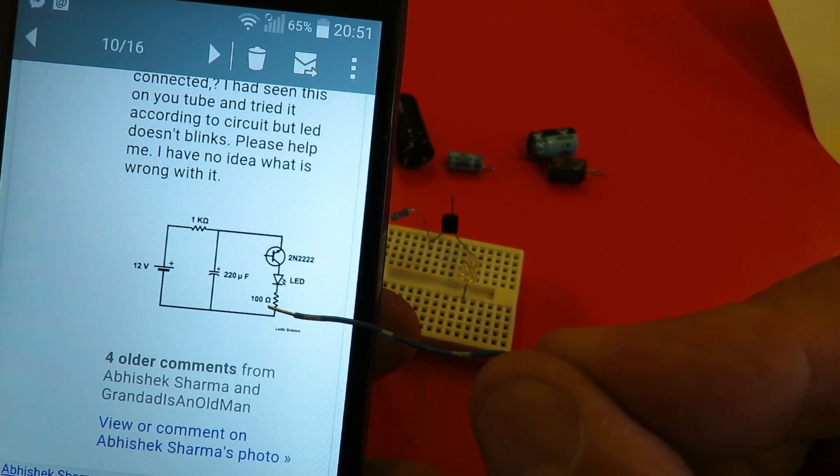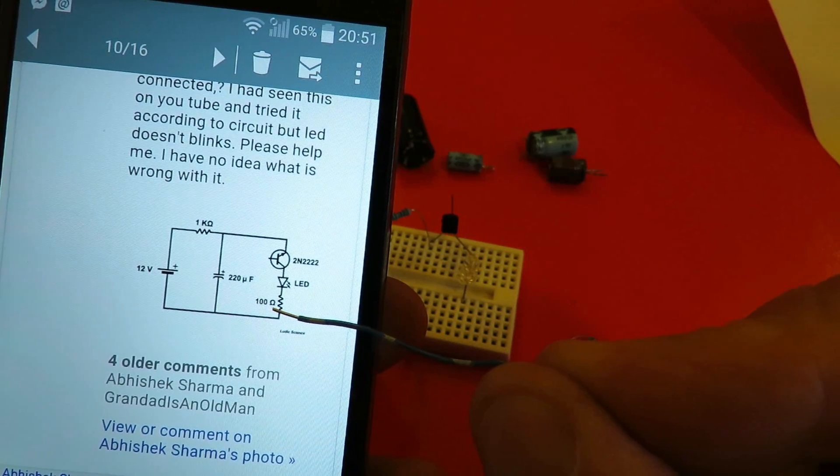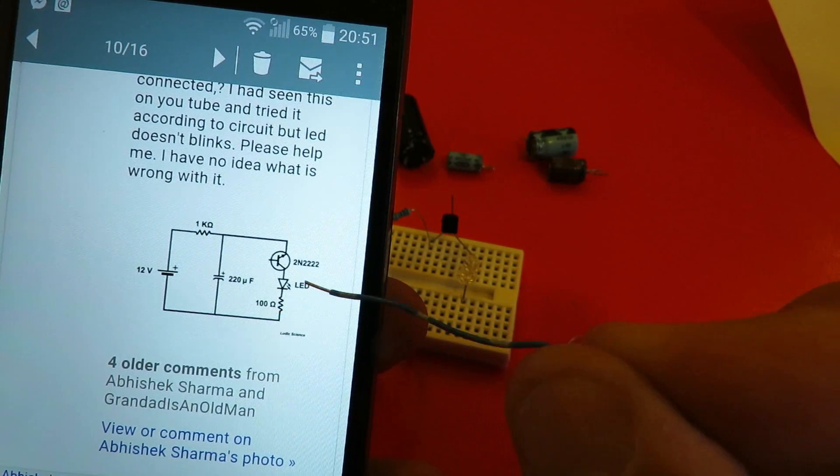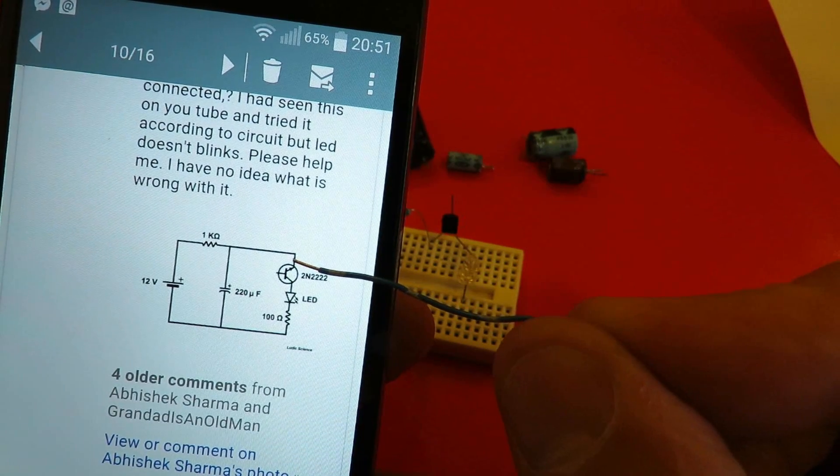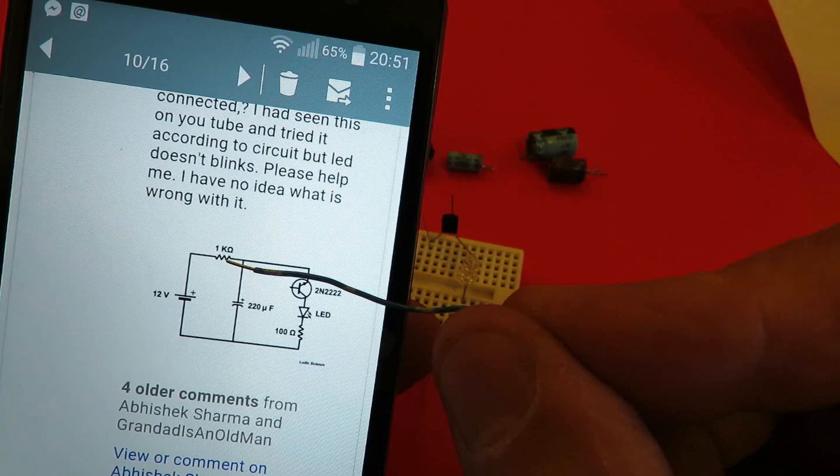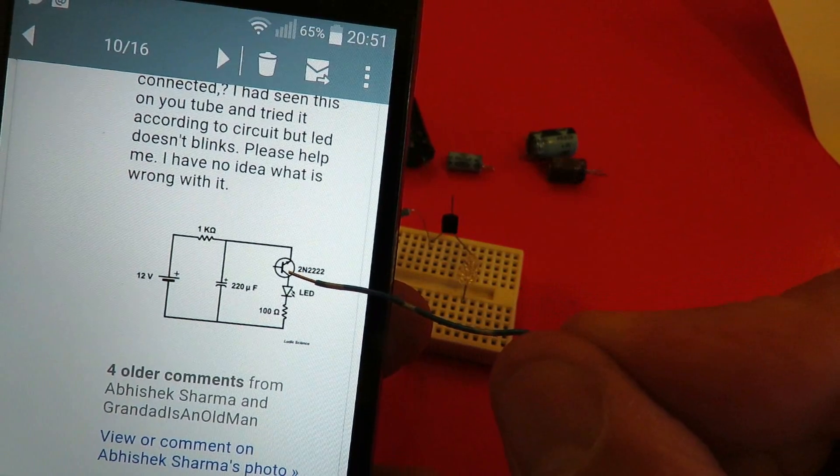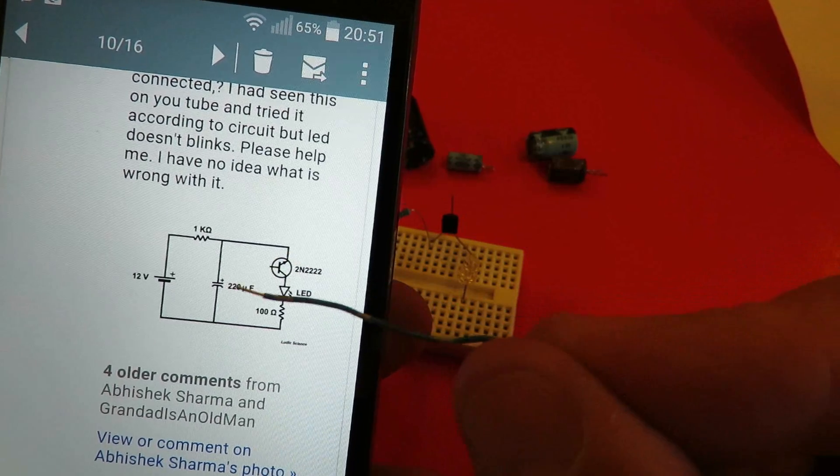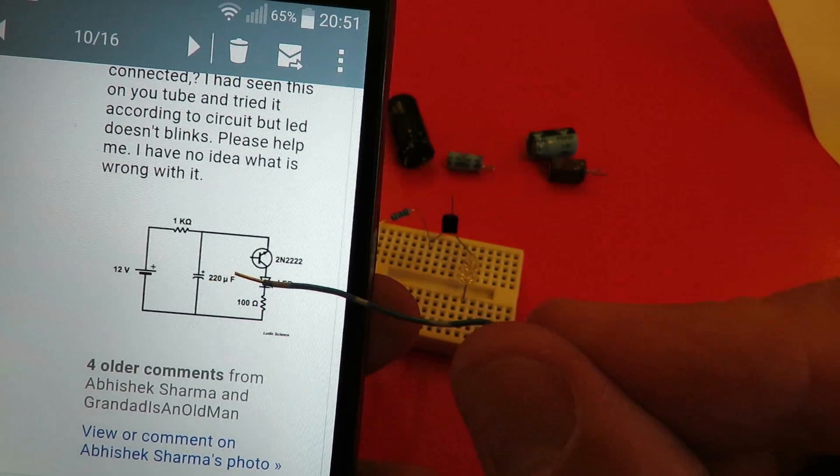In the case of Eric Wasatonic's circuit he doesn't use that 100 ohm resistor and his LED is on the other side of the transistor. So it goes positive, 1k ohm resistor, LED, then the transistor. So they both look the same. I'll put links in the video description anyway so you can look at the original circuits.